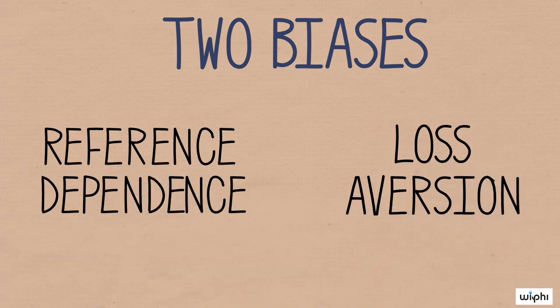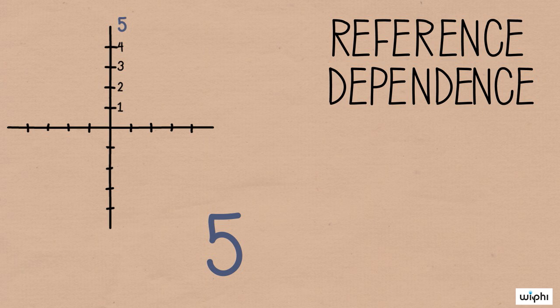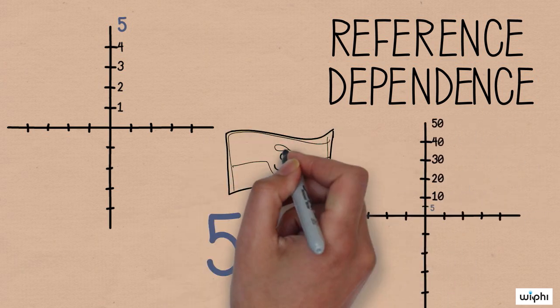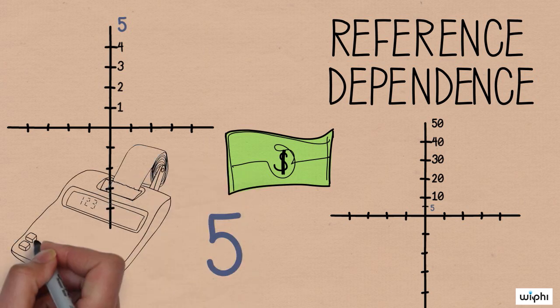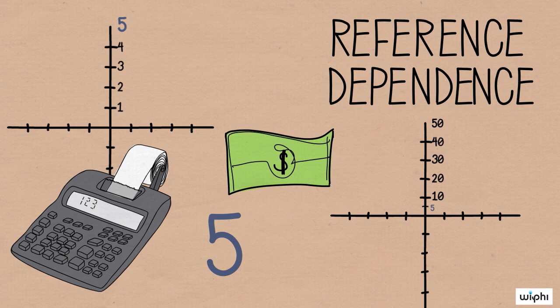Reference dependence just refers to the fact that we think about our decisions not in terms of absolutes, but relative to some status quo or baseline. This is why when you find a dollar on the ground, you don't think about that dollar as part of your entire net worth. Instead, you think in terms of the change that the dollar made to your status quo.